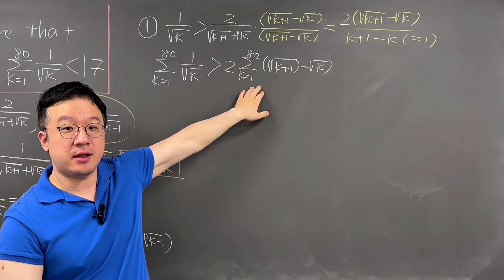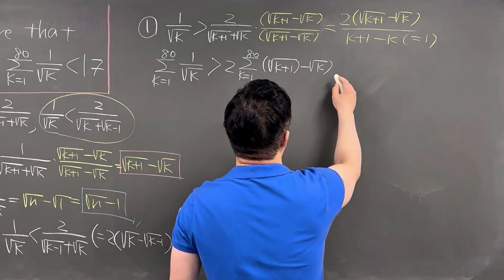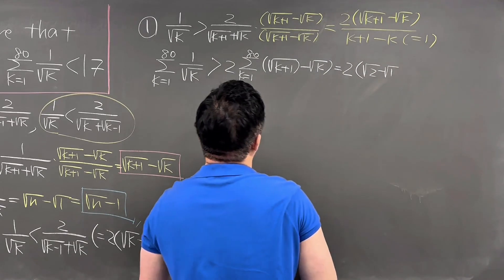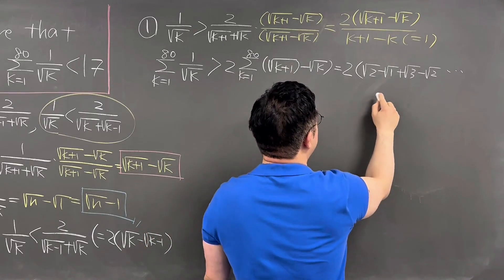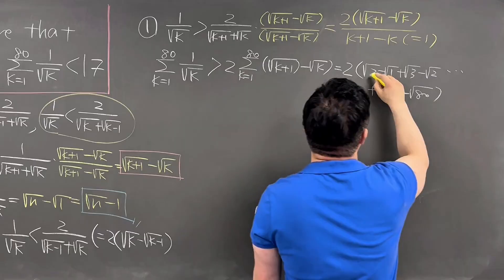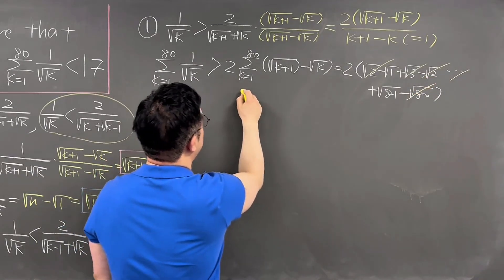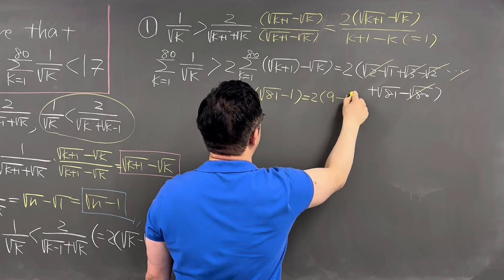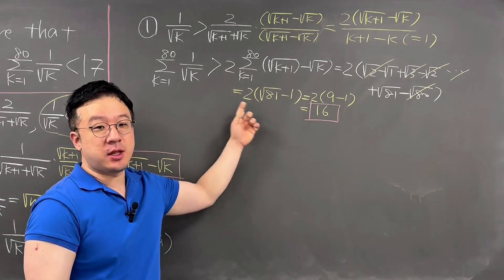On the right-hand side, this is a telescoping summation. Plugging in values to see the pattern: when k=1 we get square root of 2 minus square root of 1; when k=2, plus square root of 3 minus square root of 2; all the way up to plus square root of 81 minus square root of 80. The intermediate terms cancel — square root of 2, square root of 3, and square root of 80 all cancel — leaving 2 times (square root of 81 minus 1), which equals 2 times (9 − 1) = 16.